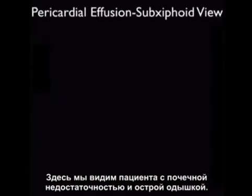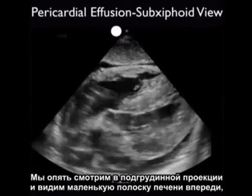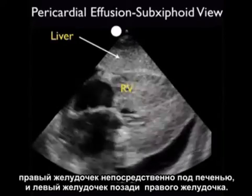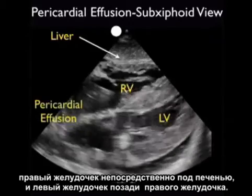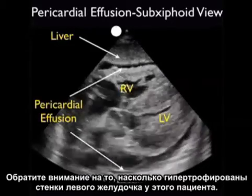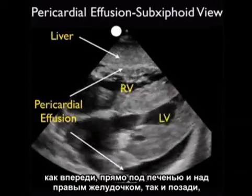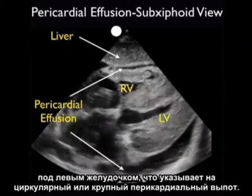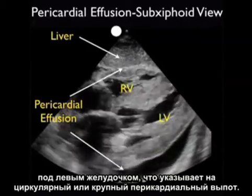Here's a patient who presented with renal failure and acute shortness of breath. We're again looking from the subxiphoid plane, so we see a little strip of the liver anteriorly, the right ventricle just below the liver, and the left ventricle seen posteriorly to the right ventricle. Notice how hypertrophic the walls of the left ventricle are on this patient. We also appreciate a dark fluid collection both anteriorly just below the liver and above the right ventricle, and posterior below the left ventricle, consistent with a circumferential or large pericardial effusion.